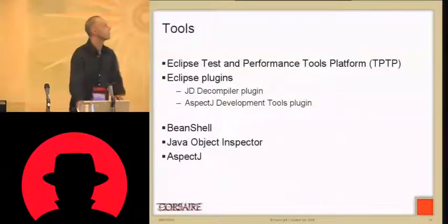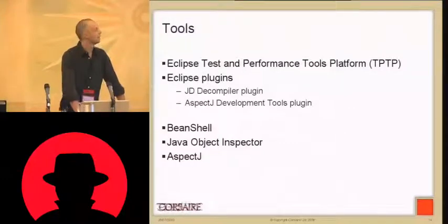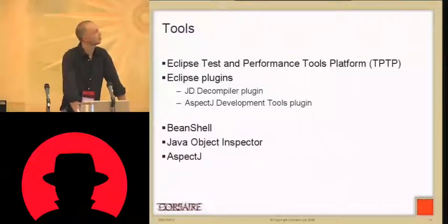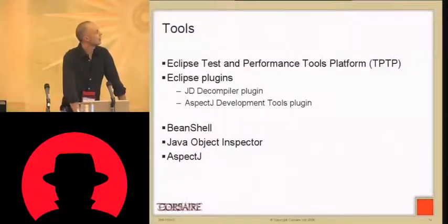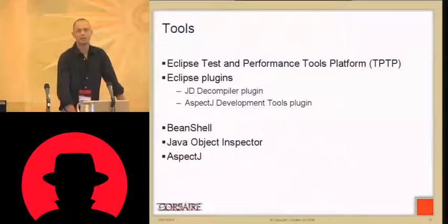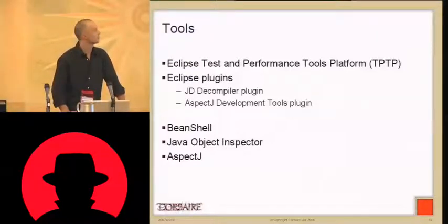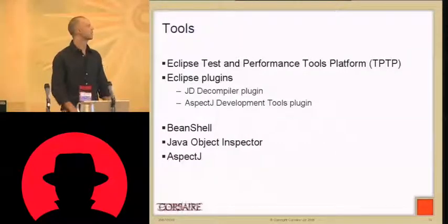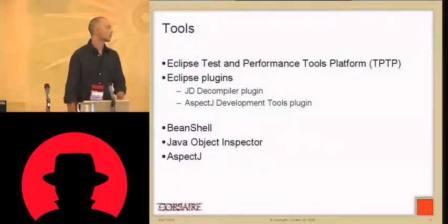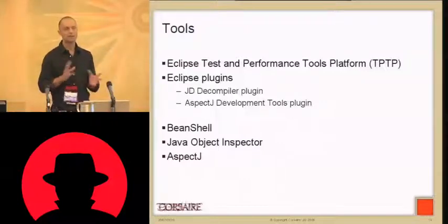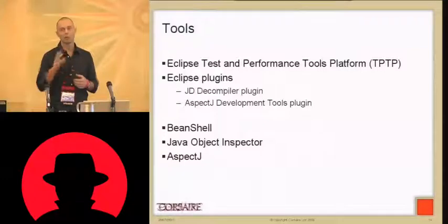The tools I'll be using are the Eclipse Test and Performance Tools Platform (TPTP), basically a profiler used to find out how a Java application runs. Also the JD Decompiler Eclipse plug-in and AspectJ tools. I still see many people using JAD for decompilation, which really doesn't work — it hasn't been updated in many years. JD Decompiler is written in Java, works on newer JREs, and is available as a plug-in and standalone app. I'll also be using Beanshell and the Java Object Inspector. The star of the show is AspectJ, which lets us manipulate a lot of Java code without understanding bytecode.